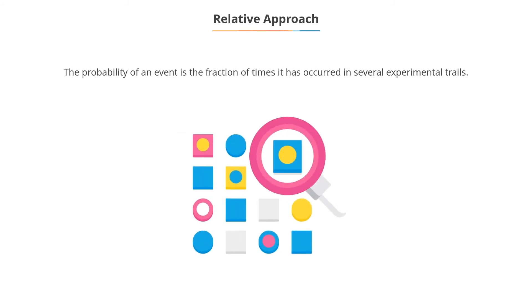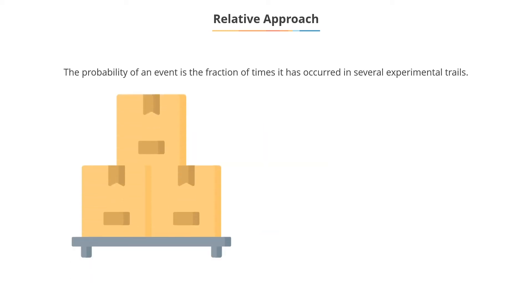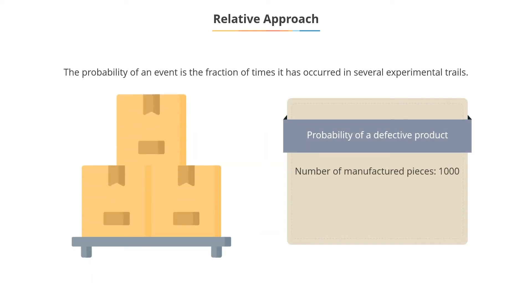Relative frequency approach: in this approach, the probability of an event is taken as the fraction of times it has occurred in several experimental trials. Past data may be used in lieu of experimental trials. Thus, if 1,000 pieces of a product are manufactured and five are defective, the probability of obtaining a defective piece is 0.005.